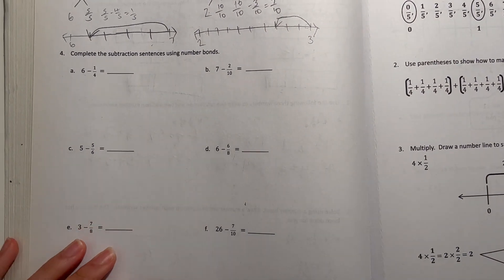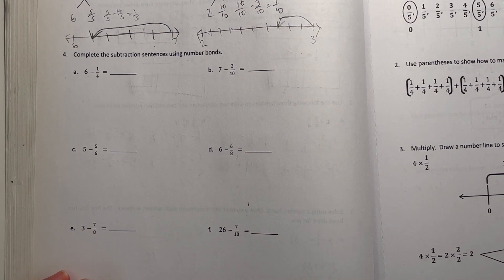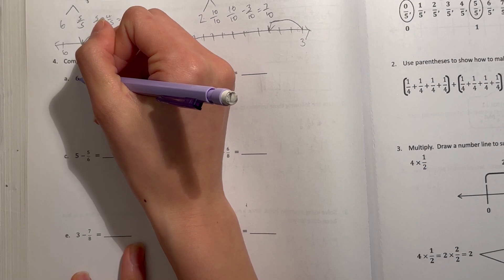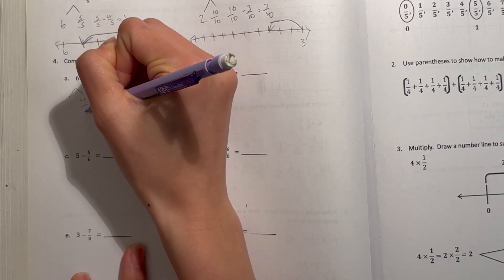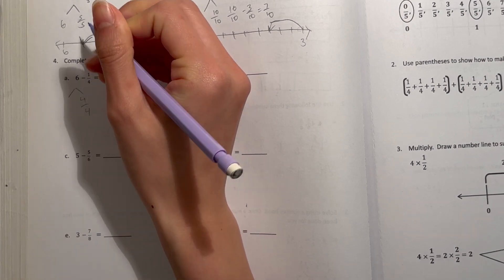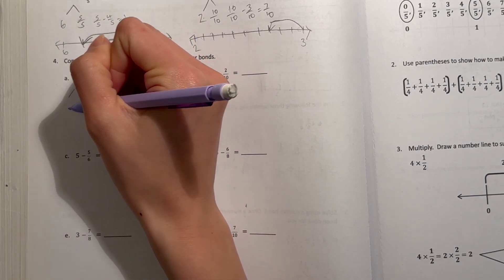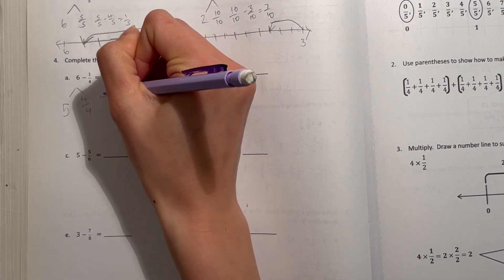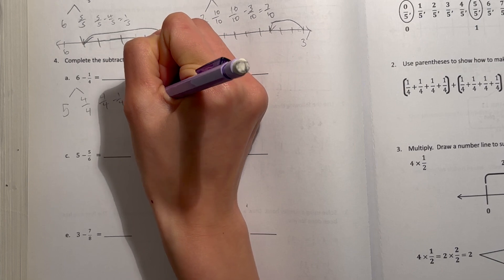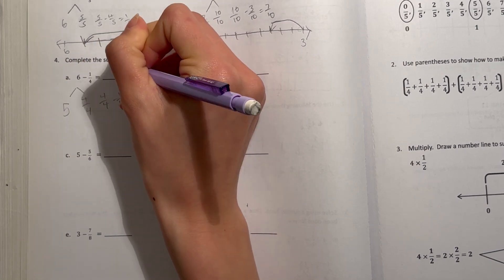Item number 4, complete the subtraction sentences using number bonds. 6 minus 1 fourth. I'm going to take out 4 fourths, because that's equal to 1. And we're using 4, because that's the denominator for 1 fourth. So 6 minus 1 is 5. Now, 4 fourths minus 1 fourth is 3 fourths. So that's 5 and 3 fourths.